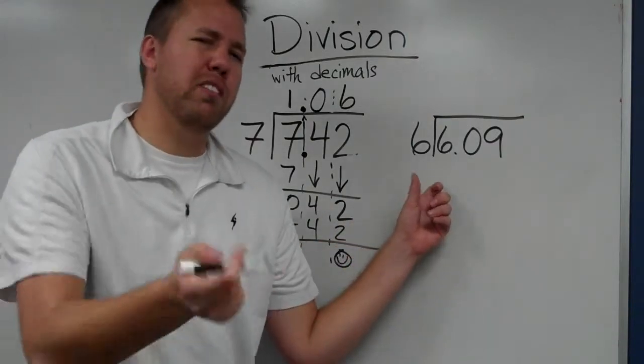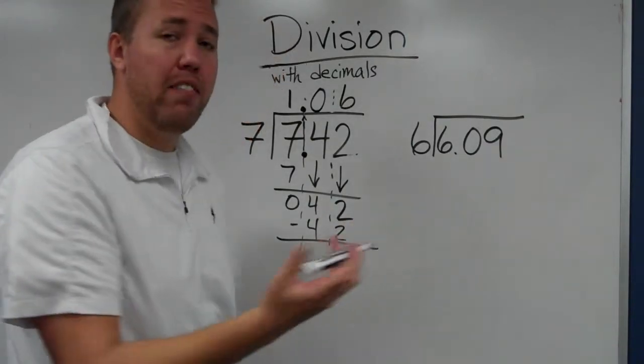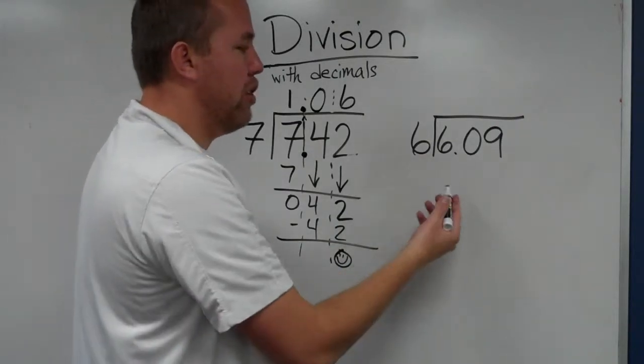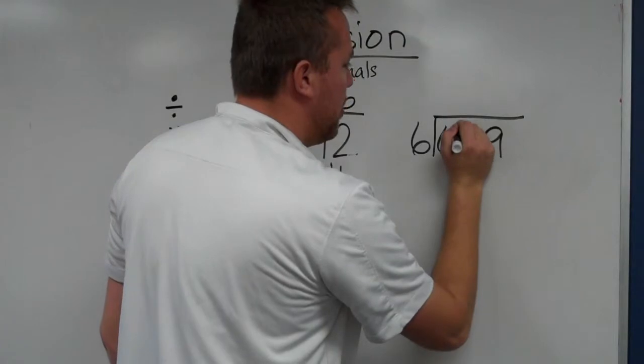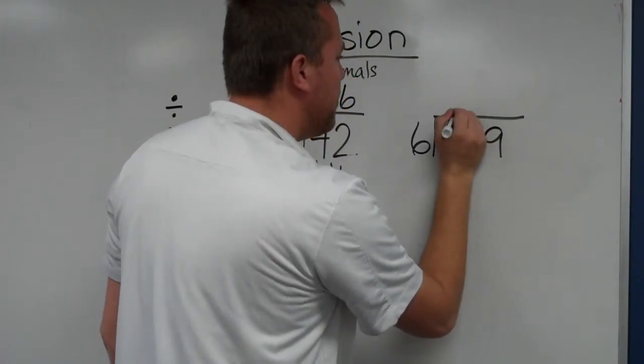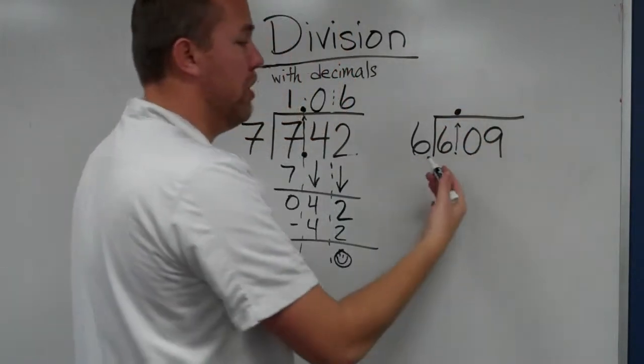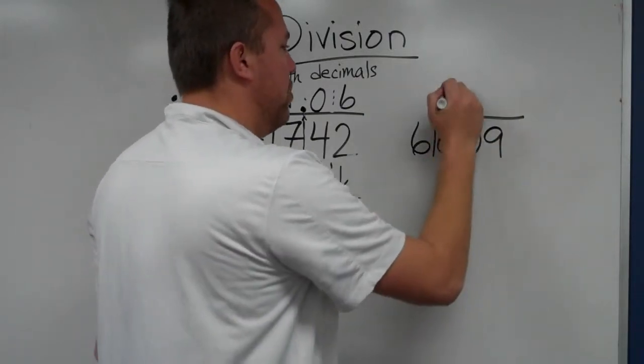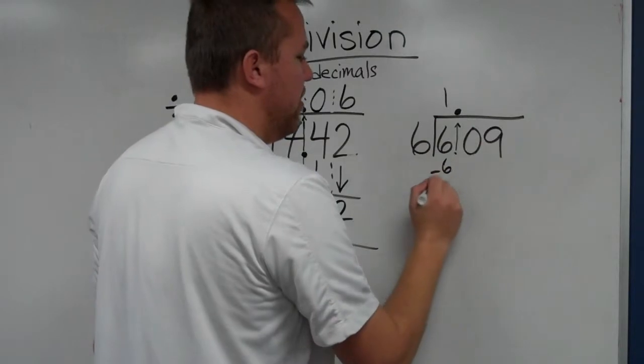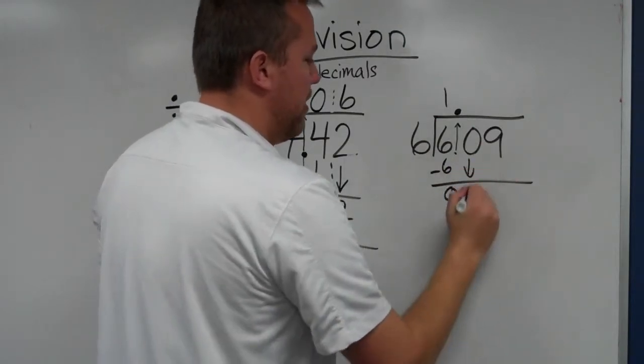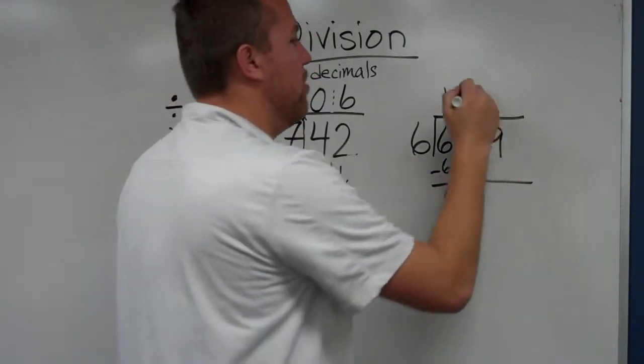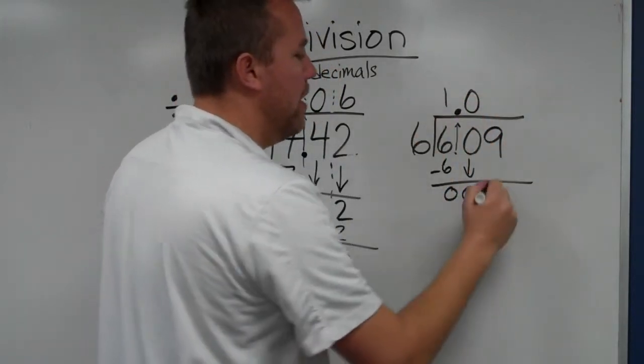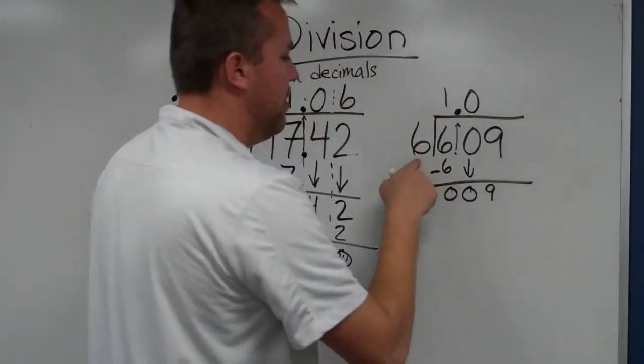Now I want to show you when something gets tricky and we have a remainder with the decimal problem, what do we do? Well, first off, first step is to bring that decimal point straight up. 6 goes in, then just ignore it for the rest of the time. 6 goes into 6 one time. 6 times 1 is 6. Sister subtracts. Brother brings down. 6 goes into 0, 0 times because brother brings down. Rufus has to repeat.